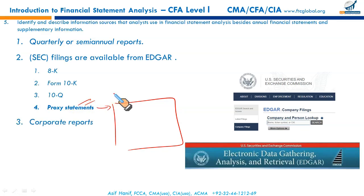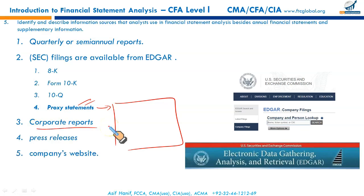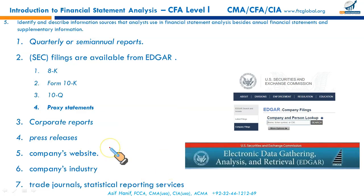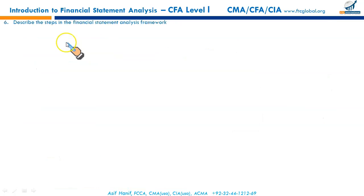Other information sources for analysts include corporate reports, press releases, company websites, industry data, trade journals, and statistical reporting services. Among all these sources, regulatory filings are considered the most reliable, being externally verified by the Securities and Exchange Commission.